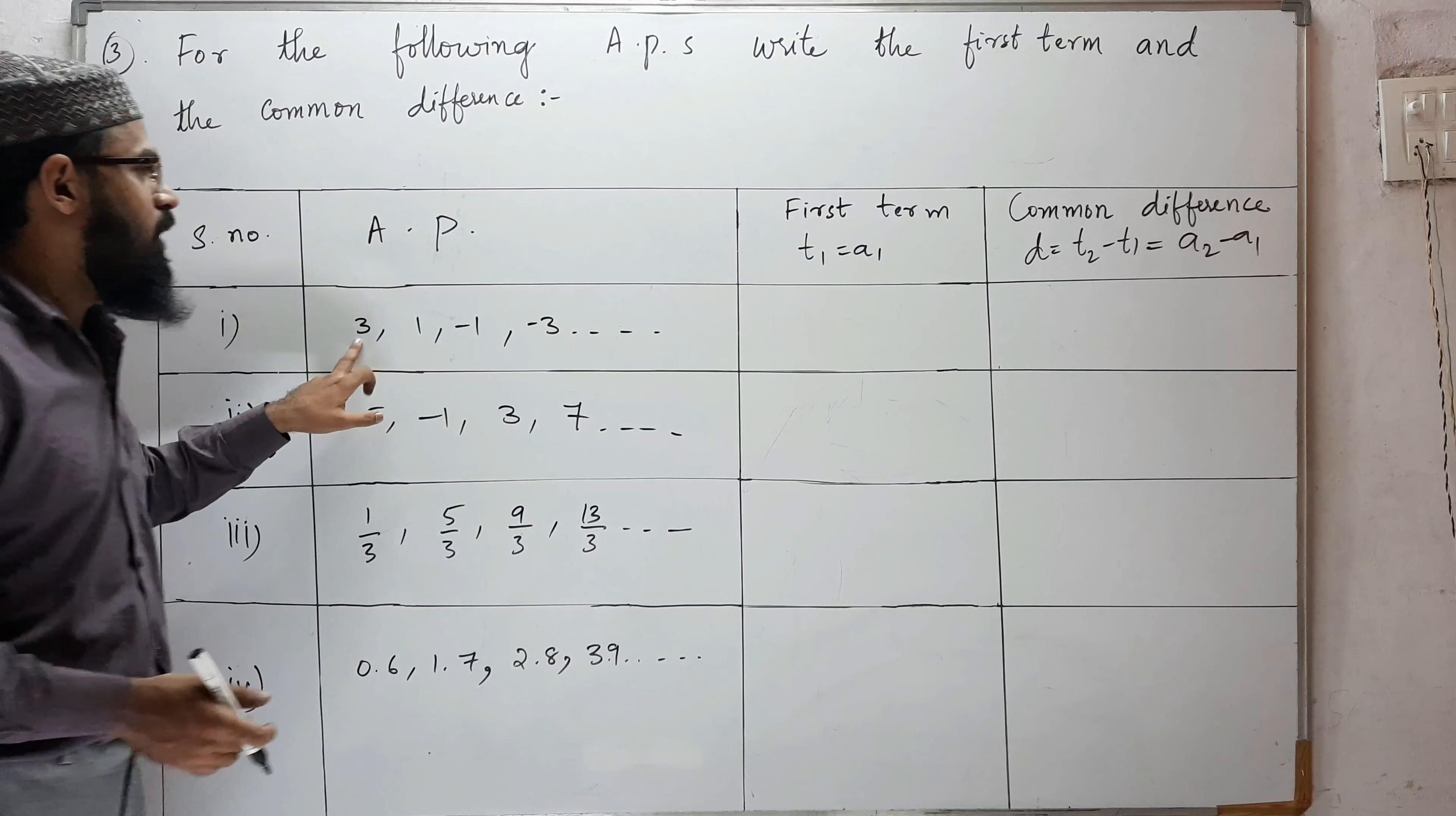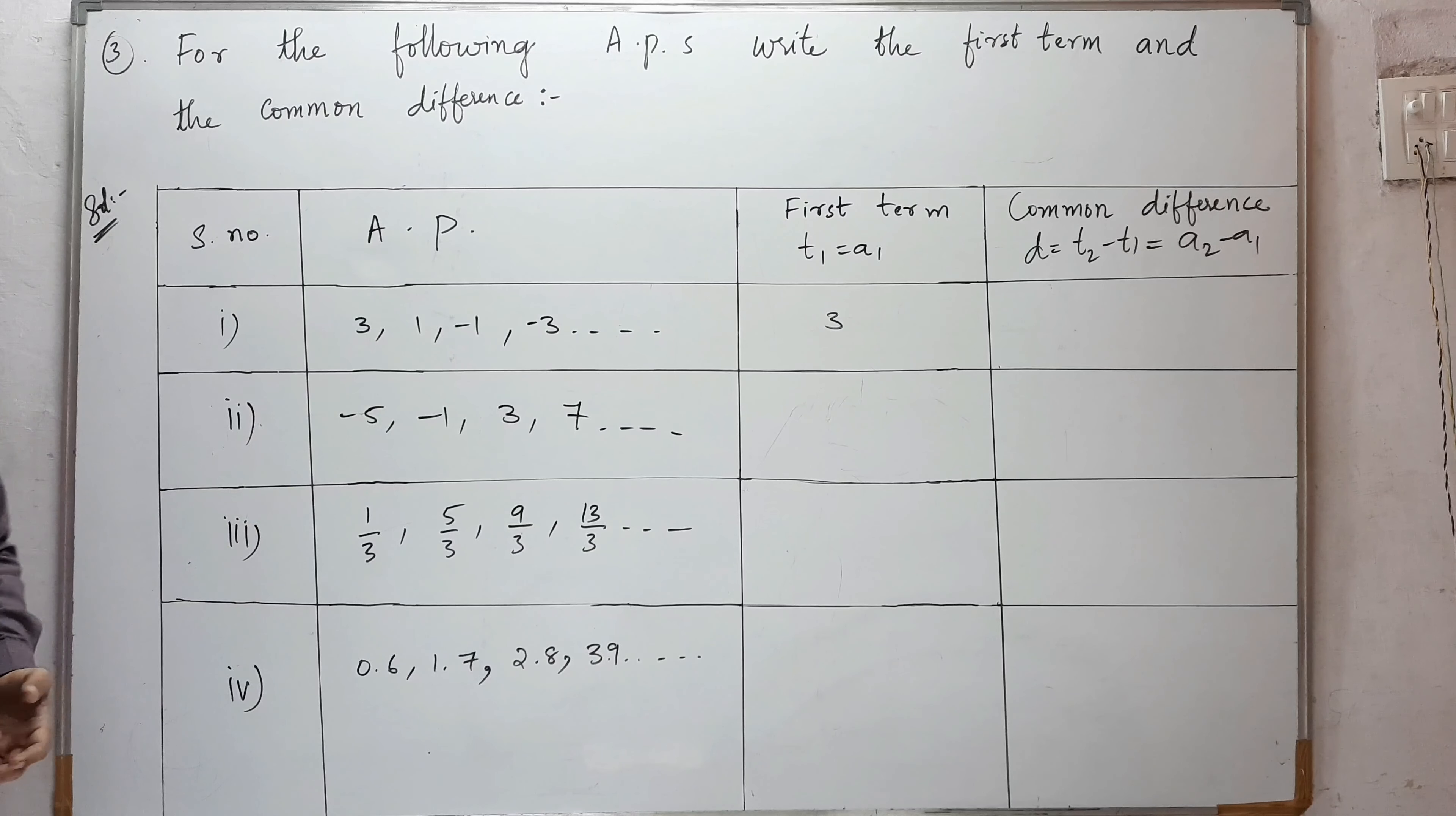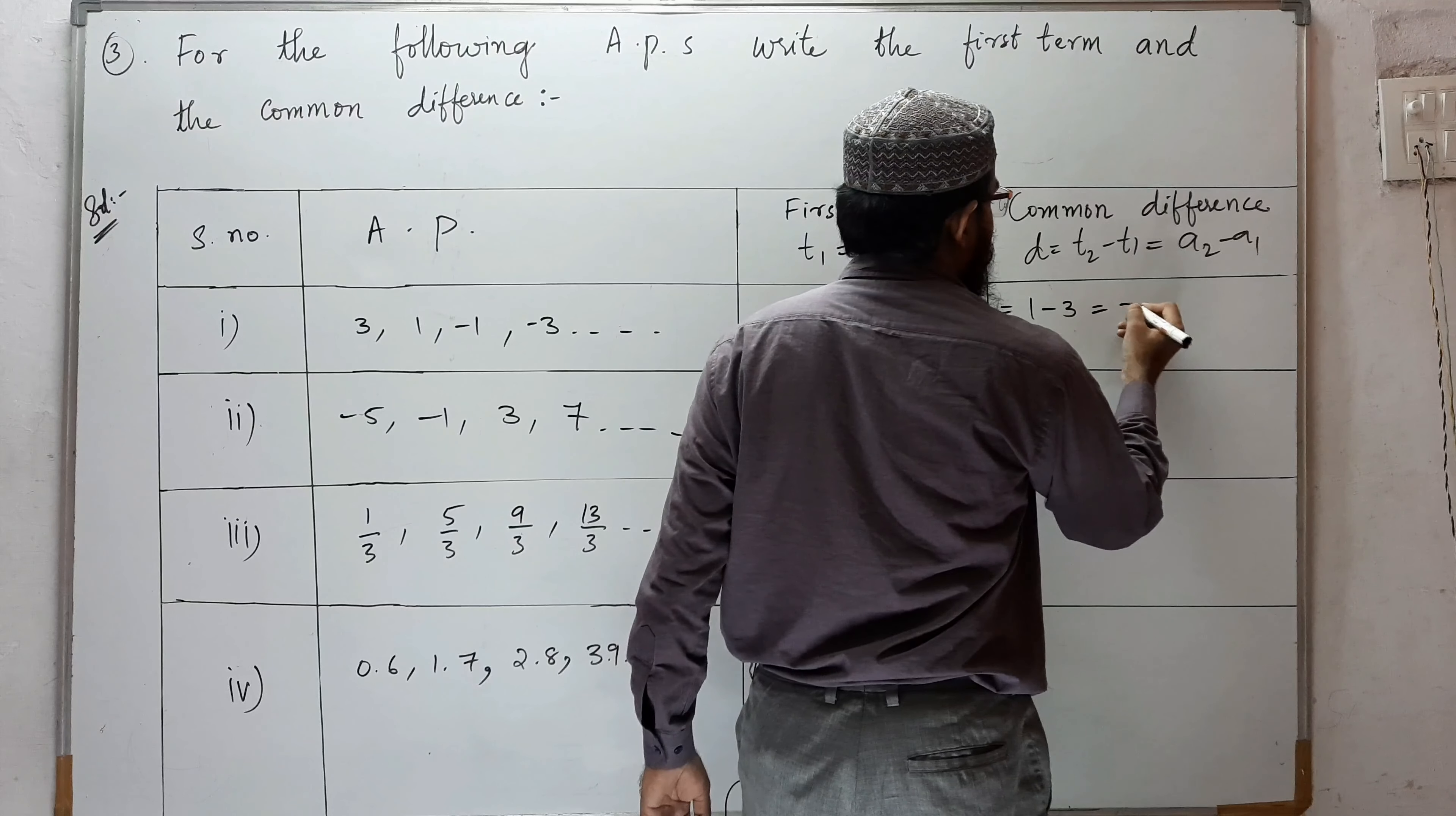What is the first term here? Three. The first term is three. The common difference formula is T2 minus T1, or you can say A2 minus A1. So A1, A2, A3. A2 minus A1: 1 minus 3. We get minus 2.